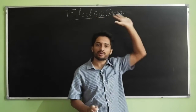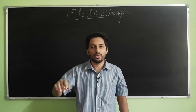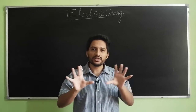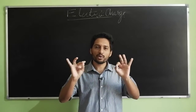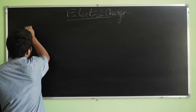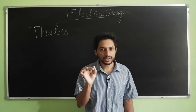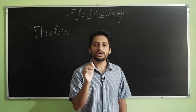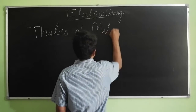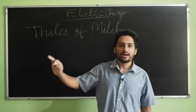Now the question is: where did this concept of electric charge come from? How did we get to the position where I just switch on a plug and see light instantaneously? This is a story that goes back 3000 years. Before 3000 years ago, there was a man named Thales. Thales was a Greek mathematician in a Greek city called Miletus, famously known as Thales of Miletus.